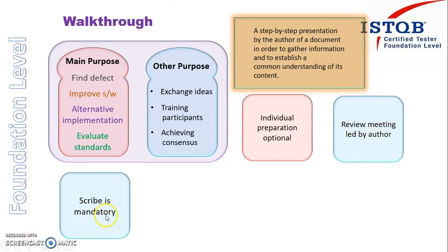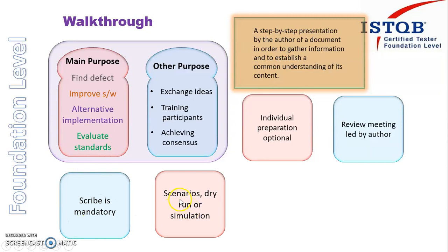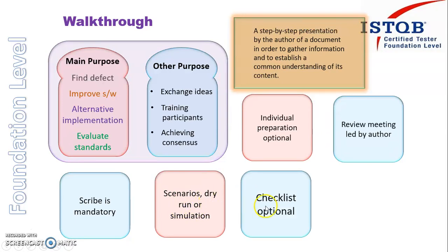In this case, a scribe is necessary — unlike the last review type, here the scribe is mandatory, because if any defect is found, the scribe is the person who will be collecting all the defects. There should also be some scenario to go through — a document containing a scenario, a dry run, or a simulation showcasing the requirements given by the customer, such as a PPT or Word document. The checklist is optional here, just as it was in informal review.